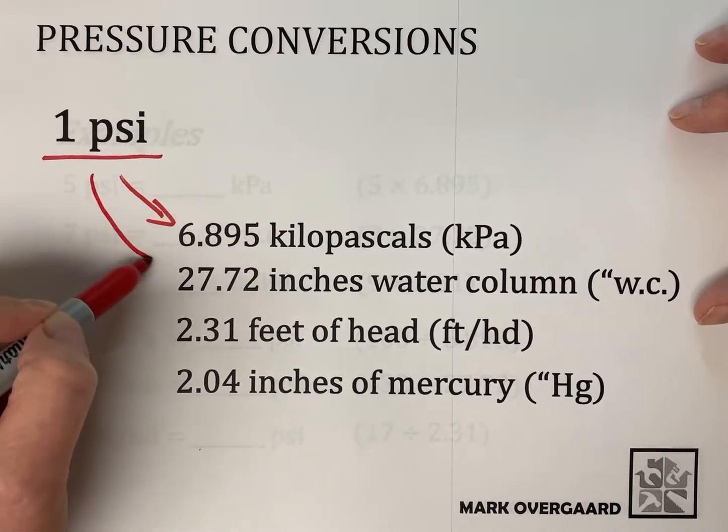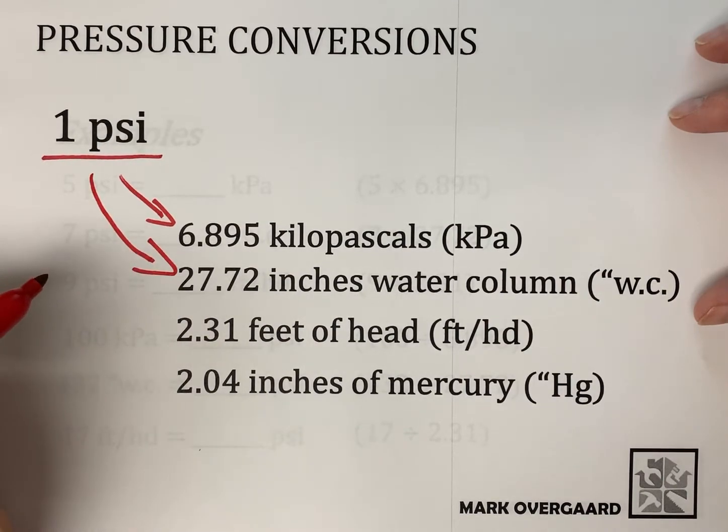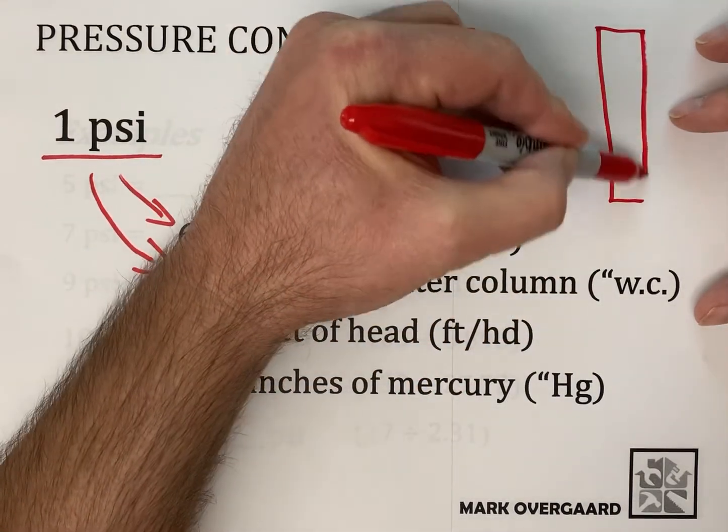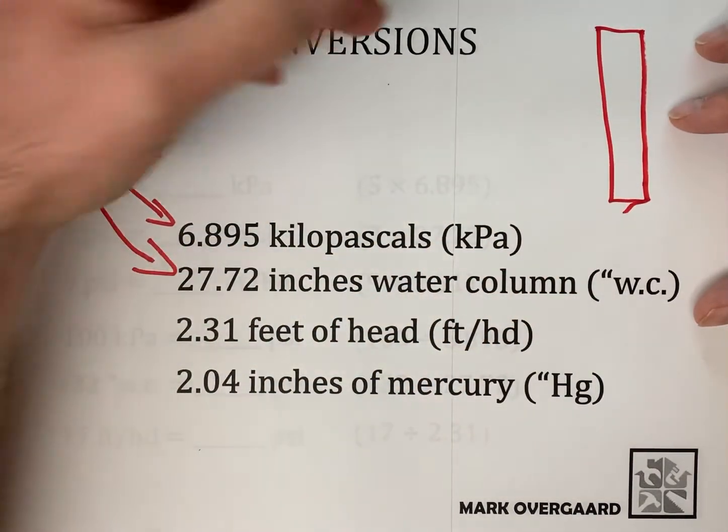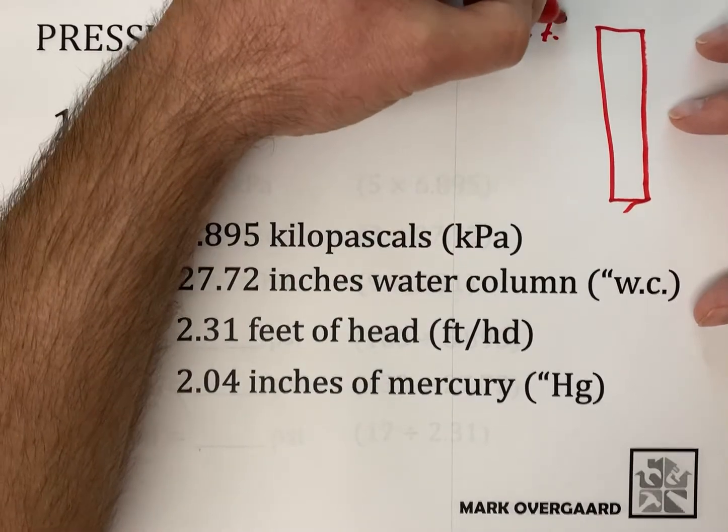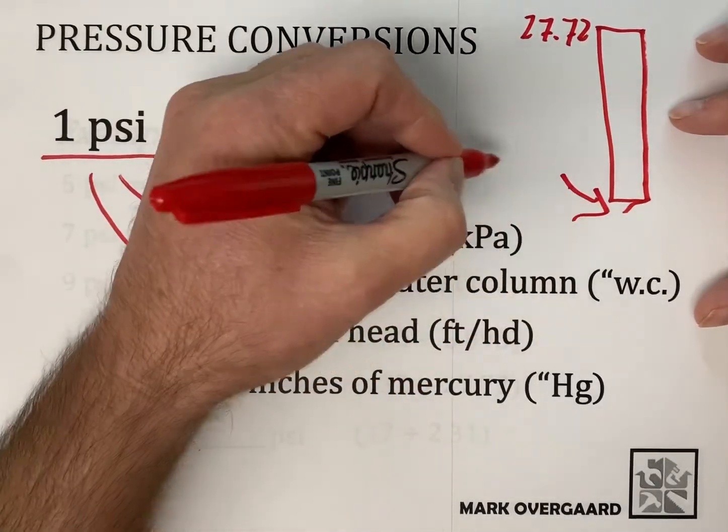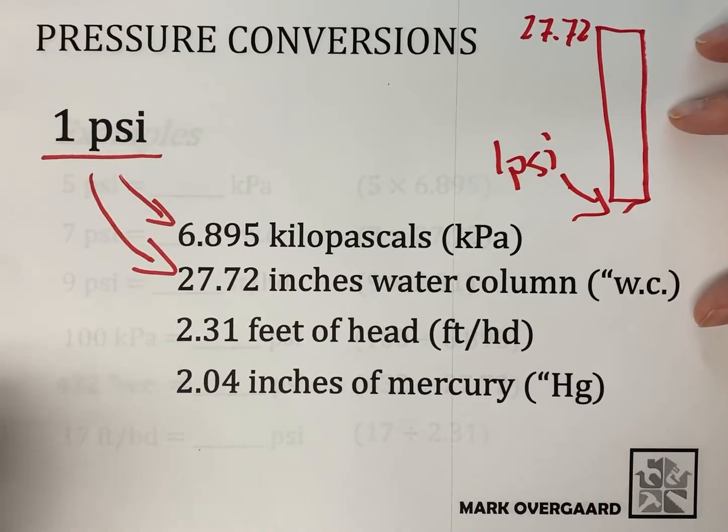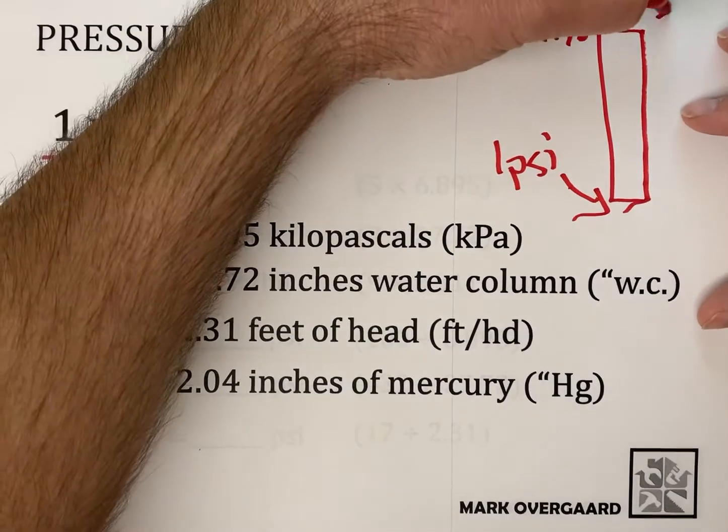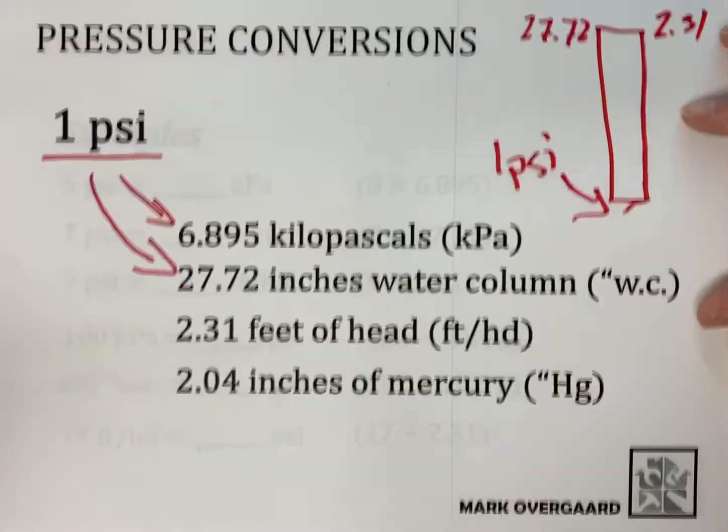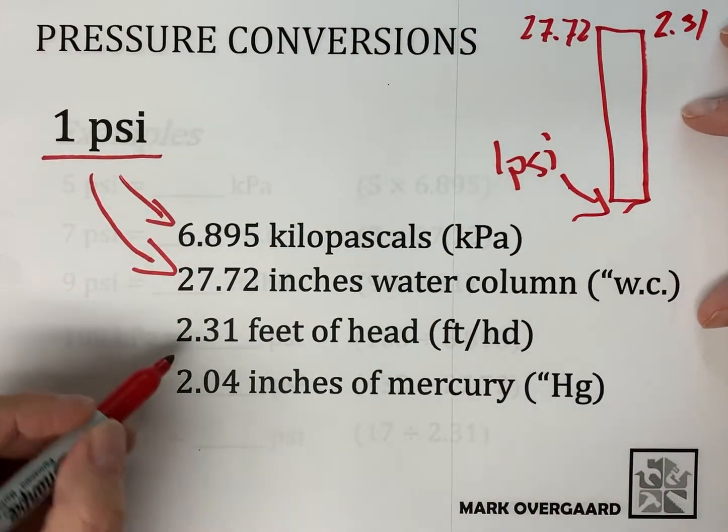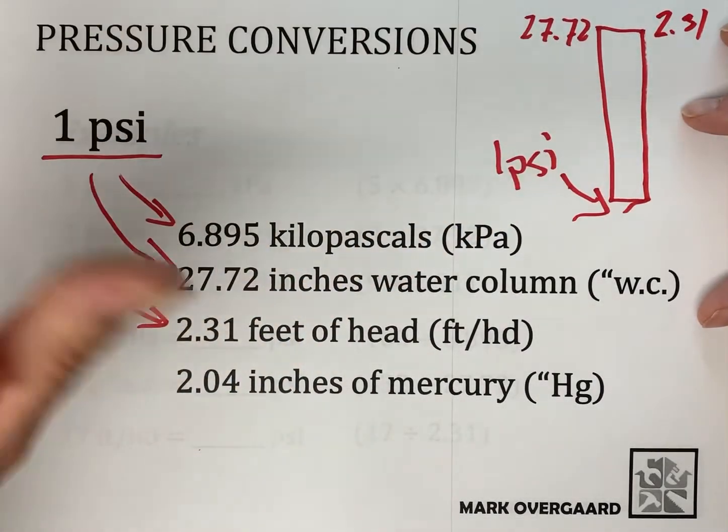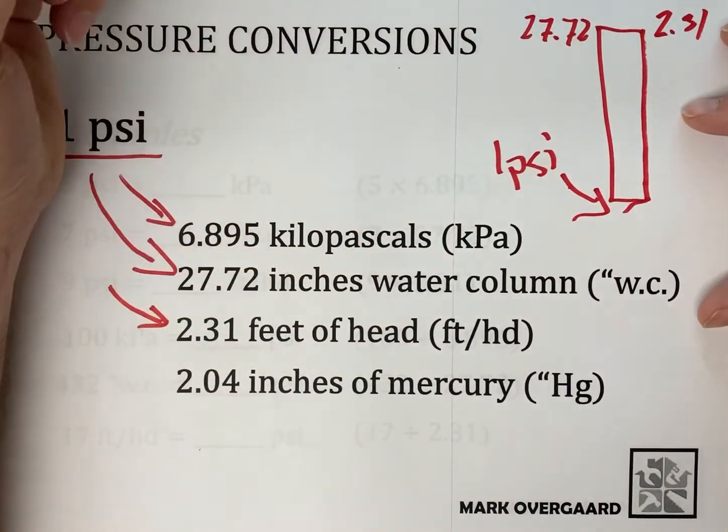One PSI would equal 27.72 inches of water column. So basically, if you took a column of water, there's your column of water, filled it up 27.72 inches, what you'd be reading down here is one PSI.